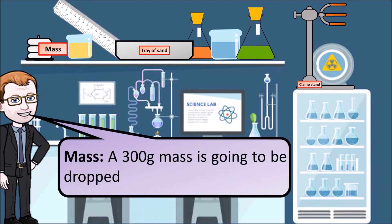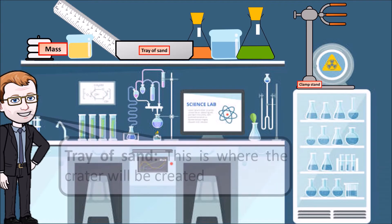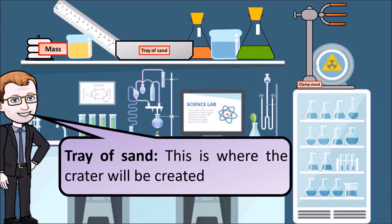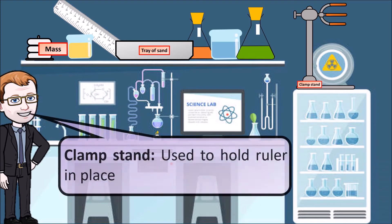We're going to use a 300 gram mass that we're going to drop. We're going to use a tray of sand so the tray of sand is what the mass is going to hit and where the crater is going to be formed. And we'll use a clamp stand in order to hold the ruler in place to make sure that it's staying at the same height from the sand each time in order for this to act as our control variable.